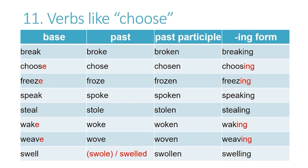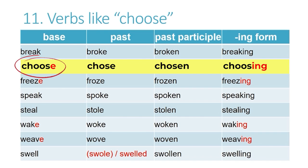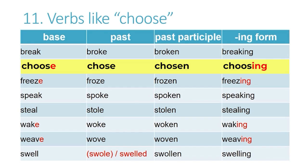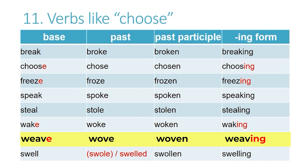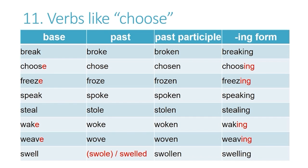Now there's another interesting thing about some of these words, and that is what we call the silent E. If you look at the base form of 'choose,' there is an E at the end of the word. However, this E does not have a sound of its own — it's what we call the silent E. When we add the ING ending we have to drop the silent E. So that happens in words like: choose to choosing, freeze to freezing, wake to waking, and weave to weaving. The final E in the base form is dropped before the ING ending is added.